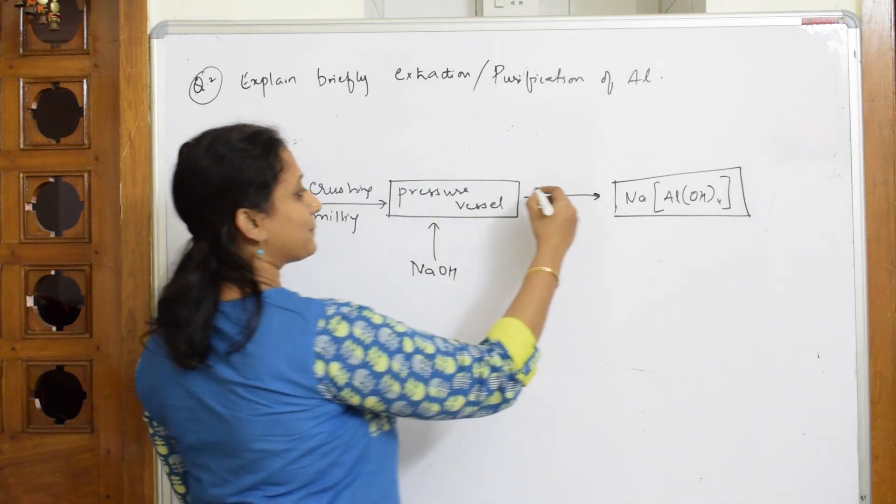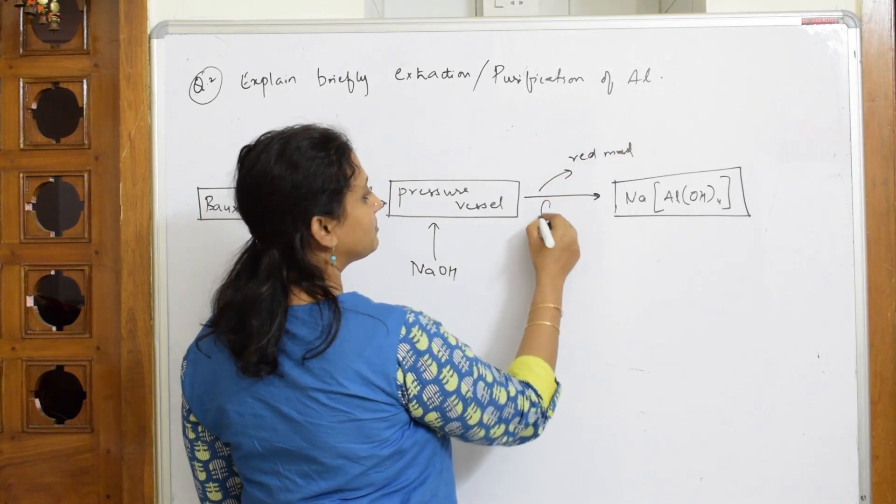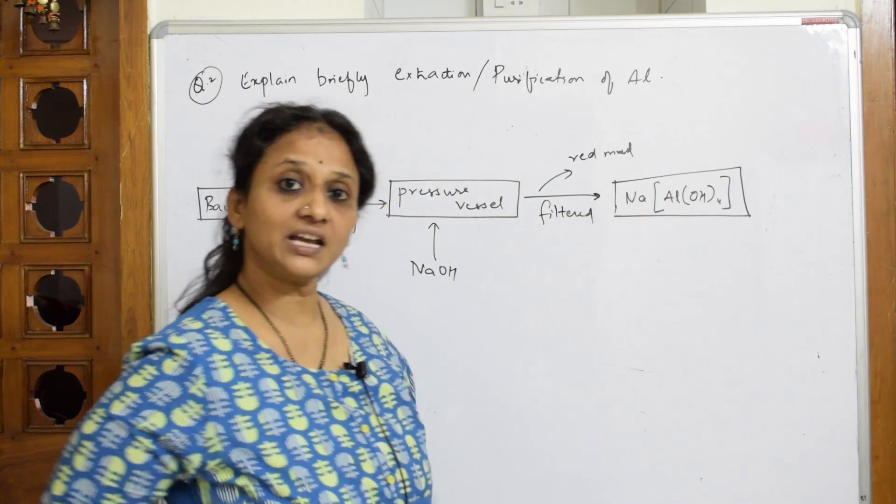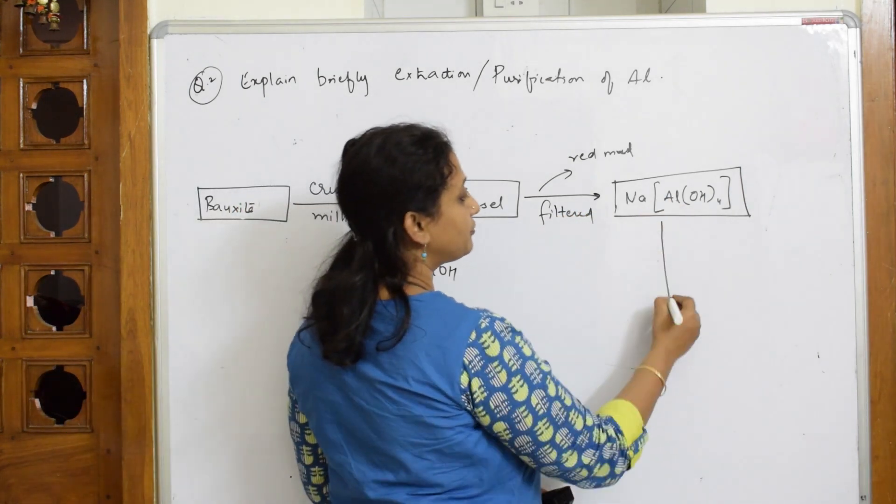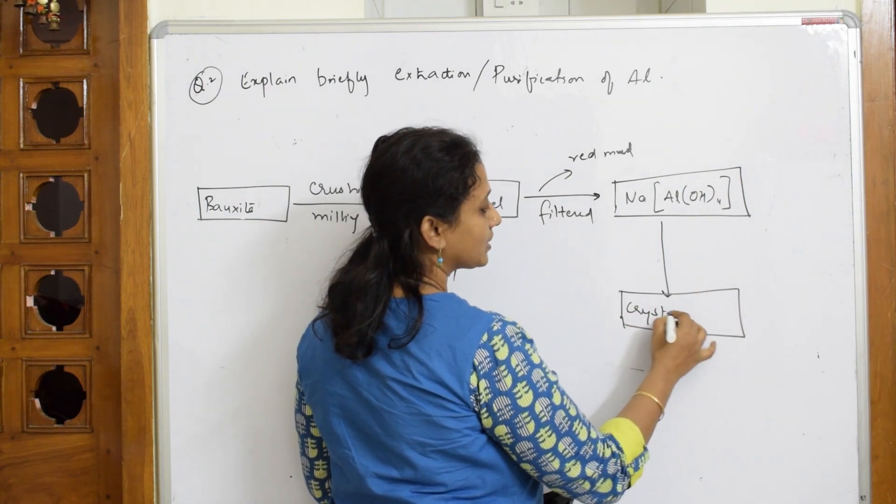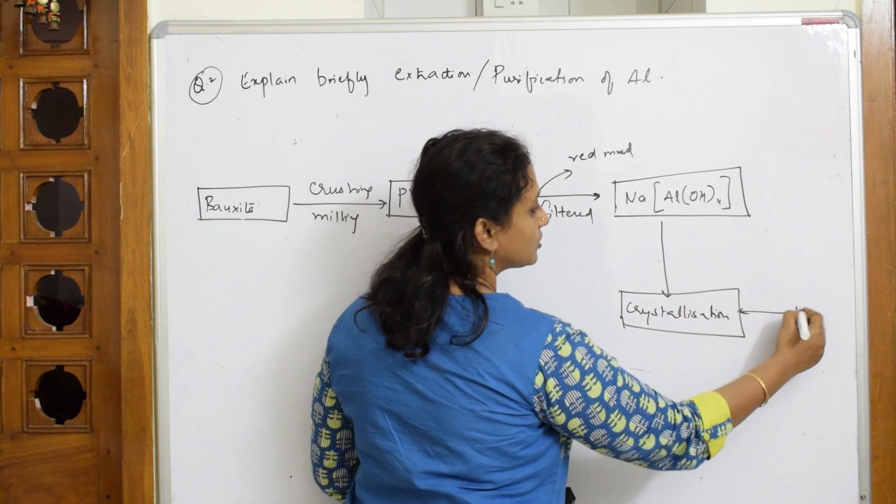Now during this process, what happens? Whatever red mud is there gets filtered off. So red mud gets filtered. Now they are going to take this complex and they are going to further allow it to undergo a process called crystallization. During crystallization, you are infusing water to this.